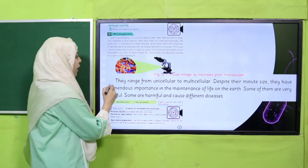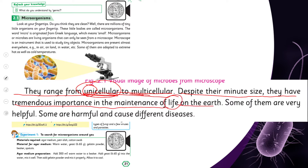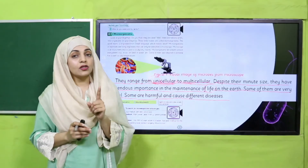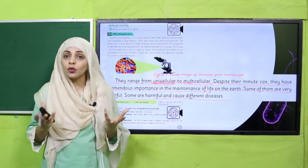Continuing the reading: 'They range from unicellular to multicellular.' Uni means one and multi means more than one, so they can be unicellular or multicellular. 'Despite their minute size, they have tremendous importance in the maintenance of life on Earth.' So although microorganisms are tiny, they are extremely important and are used extensively in large-scale applications.